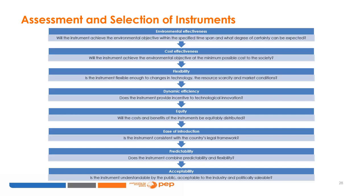8. Acceptability — is the instrument understandable by the public, acceptable to industry, and politically sellable? If users are not able to understand an instrument, its effectiveness is expected to be lower. Acceptability to industries and politicians also affects instrument selection.